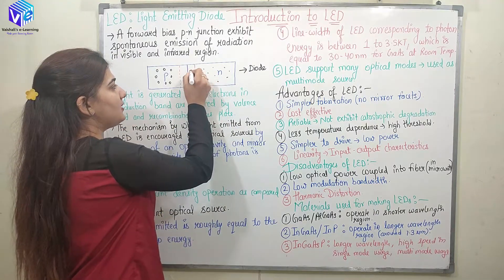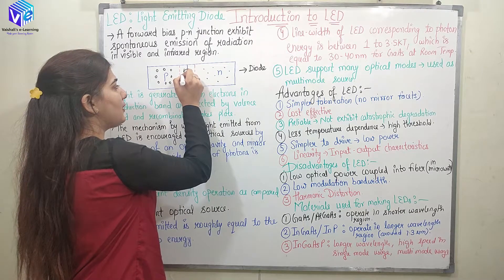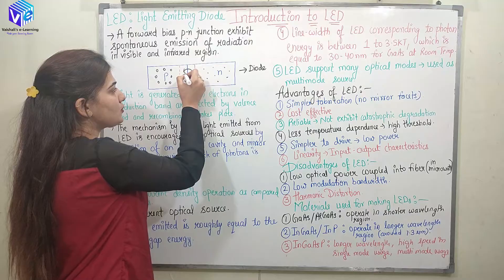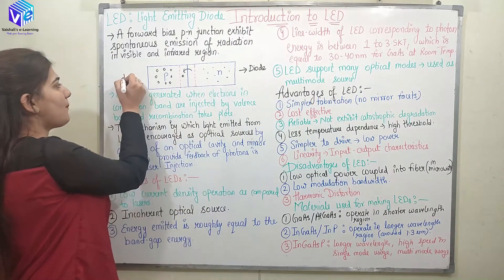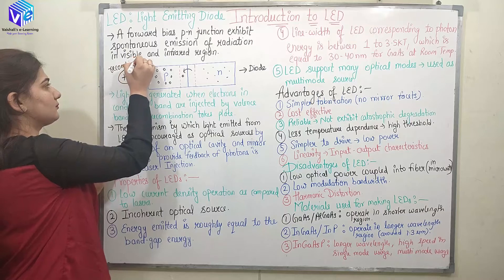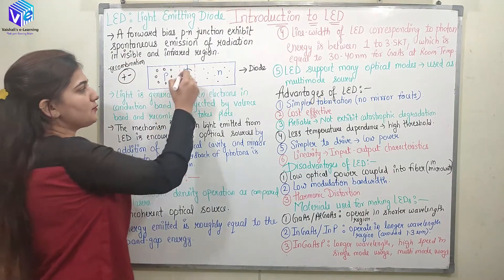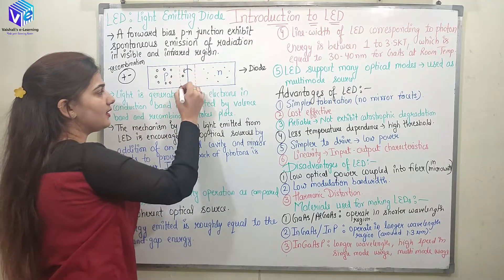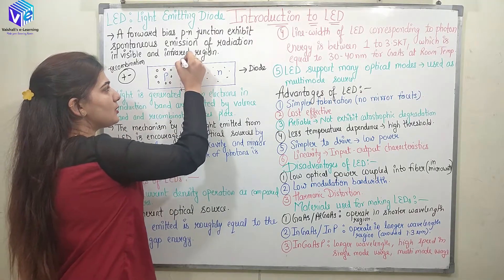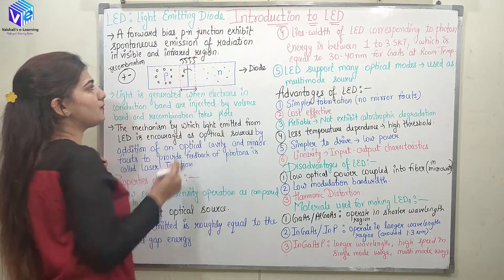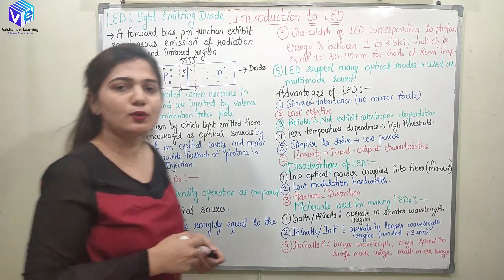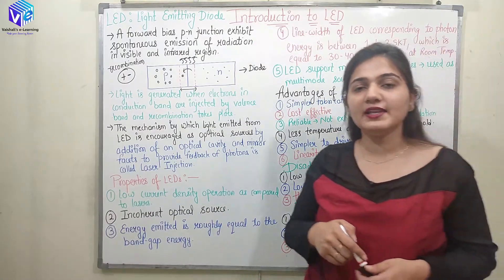These electrons will travel toward the interface of the P and N junction. At the interface, electrons combine with holes — a positive and negative charge combining — and we call this recombination. Recombination takes place in this region, marked in red. This recombination creates energy which is released in the form of light. Whenever recombination takes place, electrons from the higher energy state come down to the lower energy state, and this is the reason light is emitted.